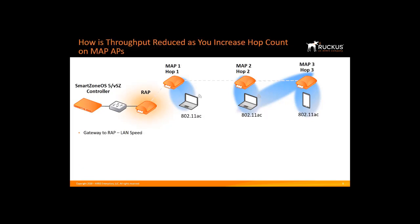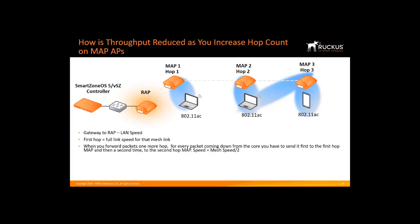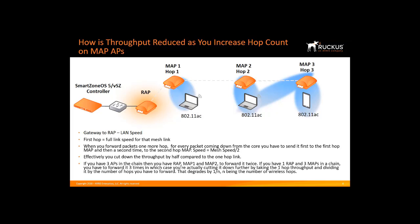How is throughput reduced as you increase the hop count on mesh APs? The simplest case is when you have no eMAP APs involved. If you are using the same frequency with only a root AP and a MAP AP, for the first hop you would get the full link speed for that mesh link. For every additional hop, the packet has to be forwarded again — this effectively cuts throughput by half per additional hop. This degrades the speed by 1/n, where n is the number of wireless hops.